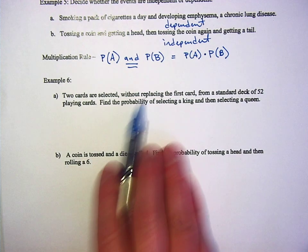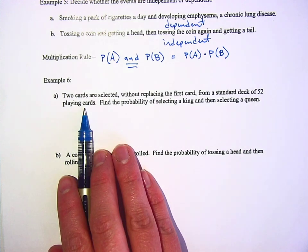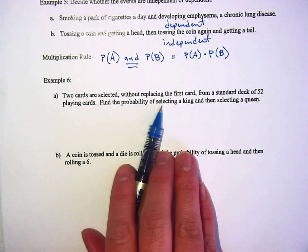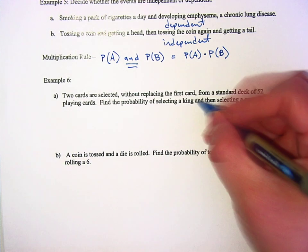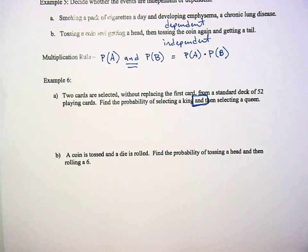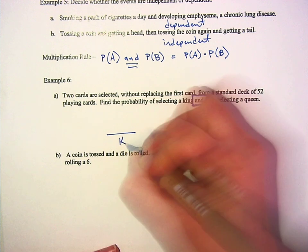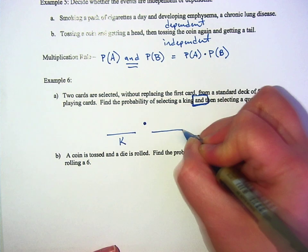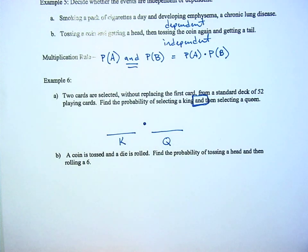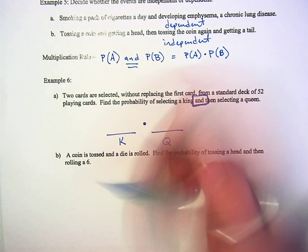So two cards are selected without replacing the first card from a standard deck of 52 playing cards. Find the probability of selecting a king and then selecting a queen. So we've got the probability of a king, and then we're going to multiply by the probability of getting a queen. What's the probability of getting a king? Four out of 52.